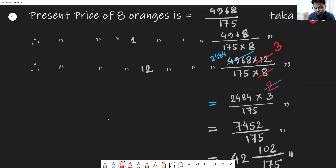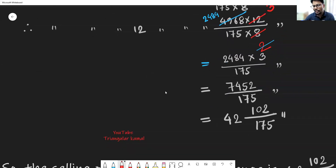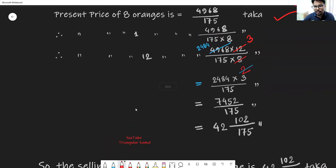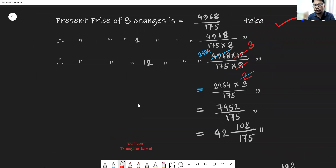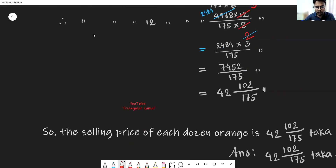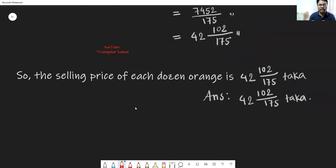Multiplying the numerator and denominator numbers, and converting the improper fraction into a mixed fraction, the answer is 42 whole 102 over 175. So this is the present price of one dozen oranges. According to the question, this is our answer: the present price of each dozen oranges is 42 whole 102/175 Taka.